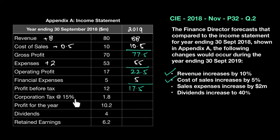The corporation tax is at 15% — pay attention here. You have to apply the tax rate to the value of profit before tax, not operating profit, not gross profit — profit before tax. The tax percentage has remained the same at 15%, however the profit before tax is now 17.5, not 12. So 15% of 17.5 gives me 2.625, which is deducted from profit before tax, giving me a profit for the year of 14.875. Keep to minimum two decimal places.